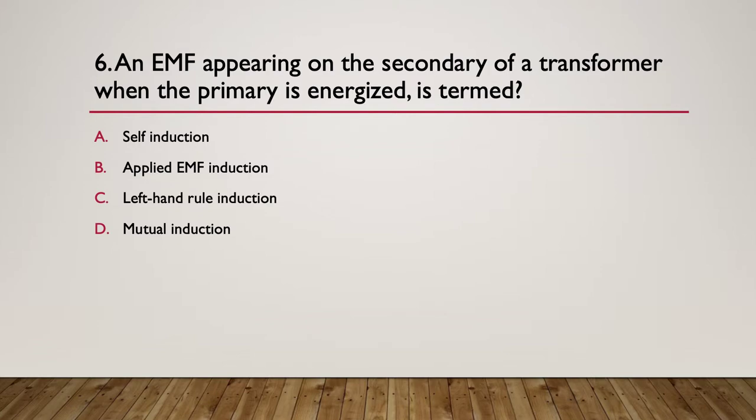Question 6, an EMF appearing on the secondary of a transformer when the primary is energised, is termed what? A self-induction, B applied EMF induction, C left hand rule induction, or D mutual induction. Here's the hint. List the two main types of induction, what are they, and then how would they apply here? There are only two types of induction. So in this particular case, because there is a primary and a secondary, therefore it's not self-induction, it must be mutual induction. So inducing a voltage in one side energises the opposite side. So an EMF appearing on the secondary of a transformer when the primary is energised, has got to be mutual induction.